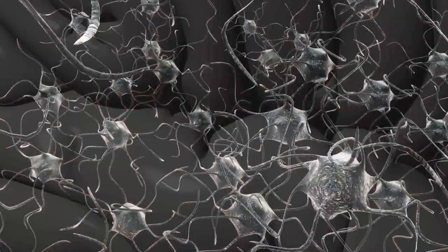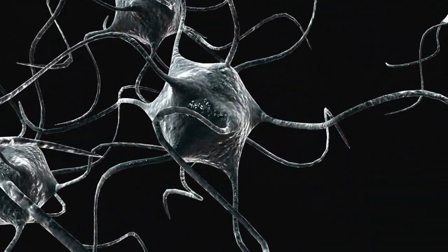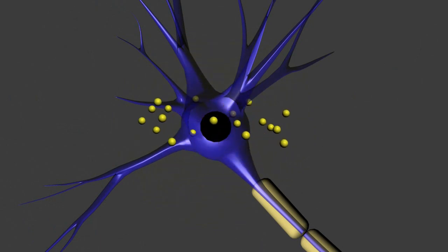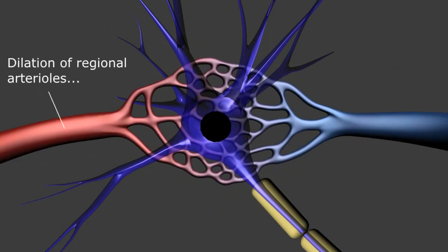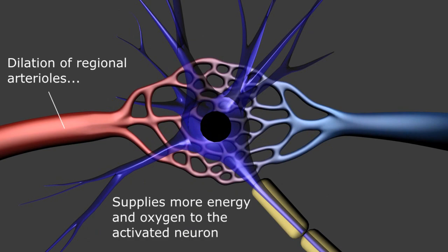When a group of neurons activate to perform a particular task, local biochemical changes causes the regional arterioles to dilate and thus supply the necessary energy and oxygen.